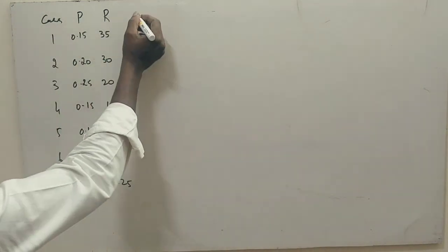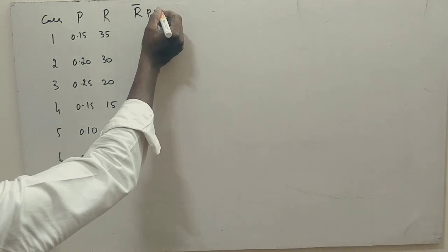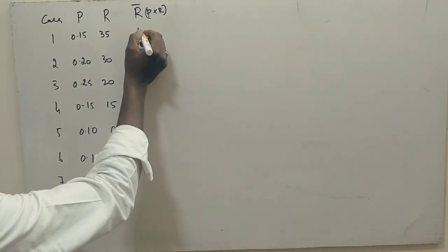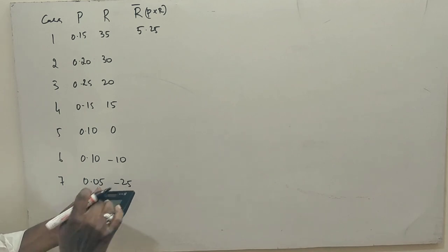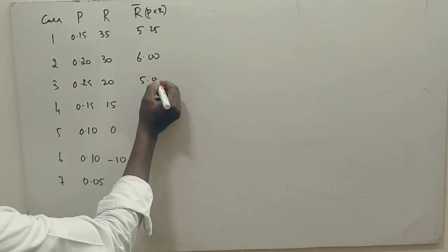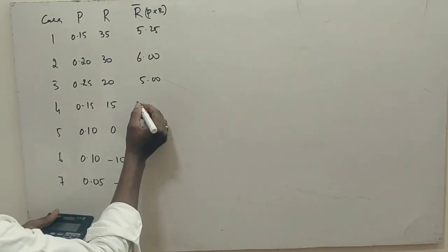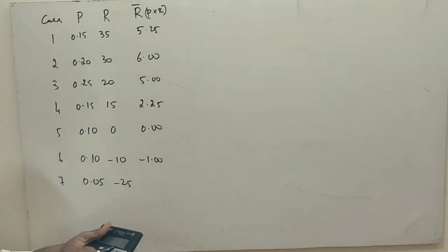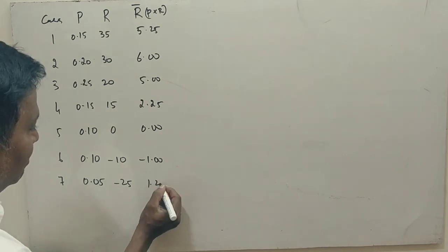Now we have to answer for R dash. R dash is nothing but P into R. So 35 into 0.15 is 5.25, 30 into 0.25 is 6, 20 into 0.25 is 5. Am I right sir? 15 into 0.15 is 2.25 and this you don't get anything. This is minus 1 because minus 10 into 0.1 is 1, and this is 25 into 0.05, 1.25. Am I right sir?